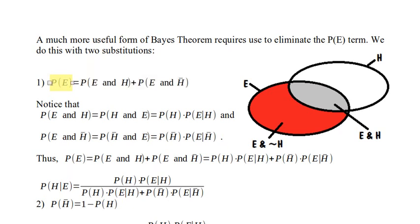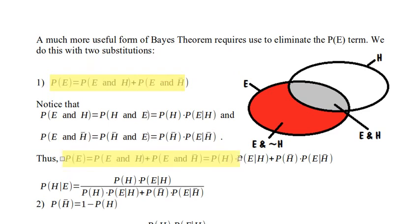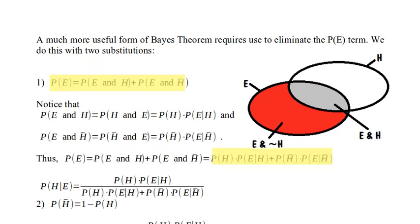The first term is the probability of E and H, which equals the probability of H times the probability of E given H. We go through the same process for the probability of E and not H, then put it all together. We can rewrite the probability of E as: the probability of H times the probability of E given H, plus the probability of not H times the probability of E given not H. That becomes our new denominator.